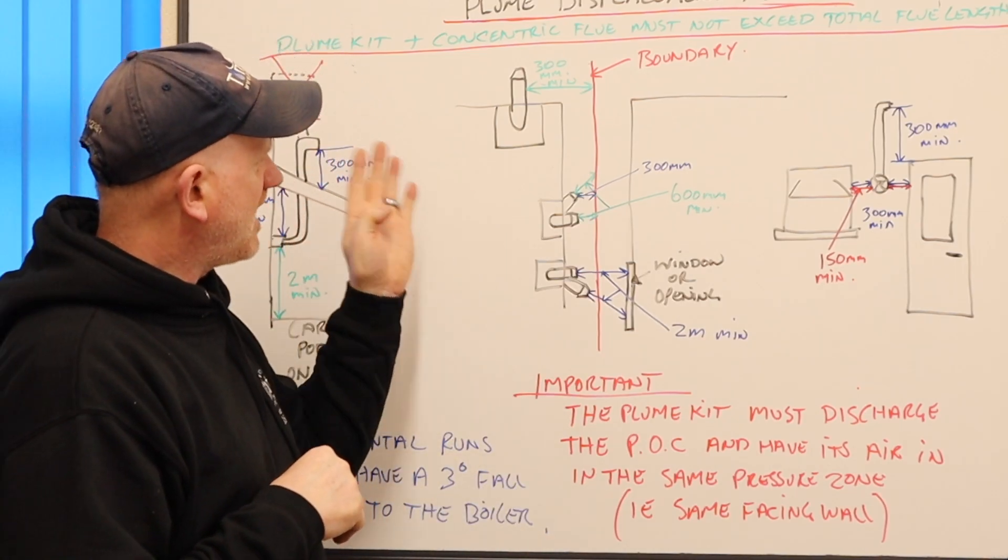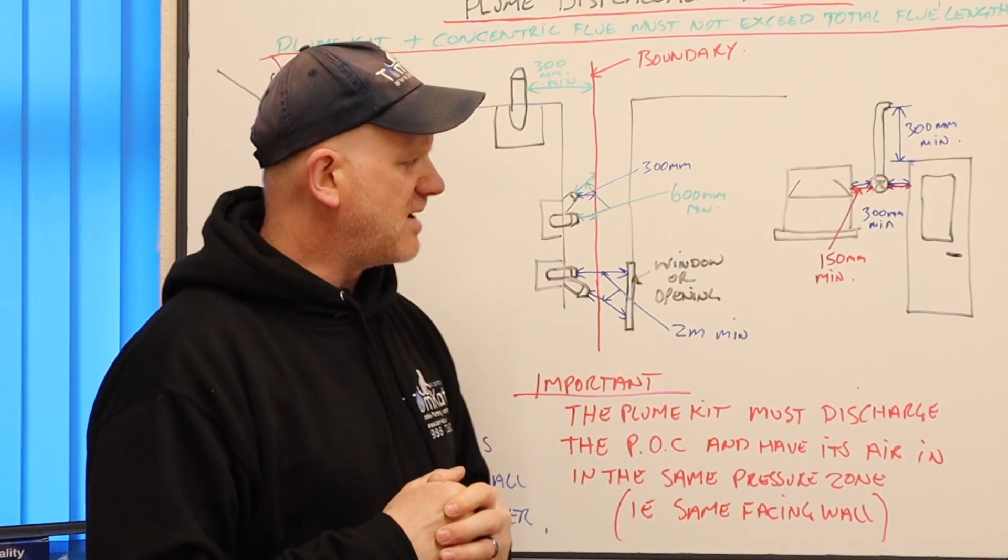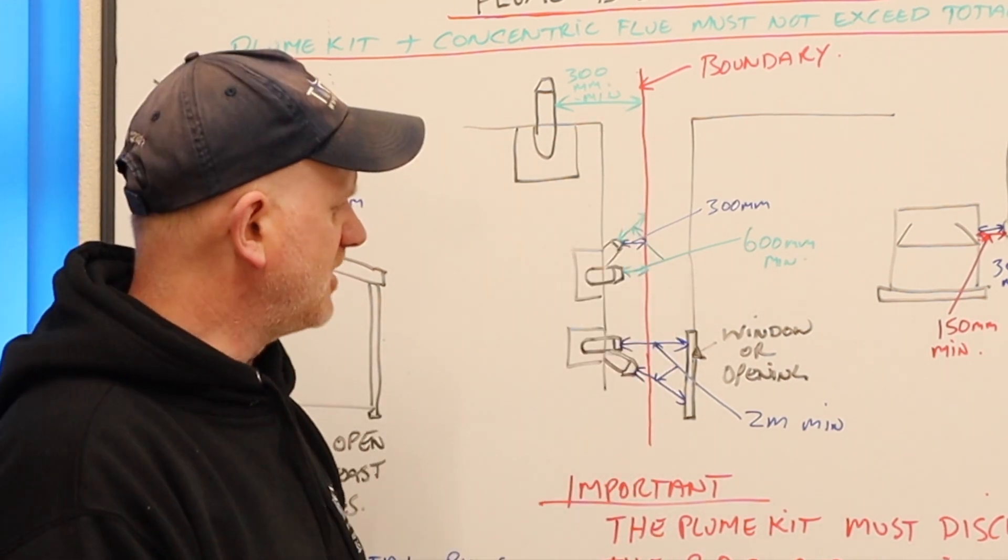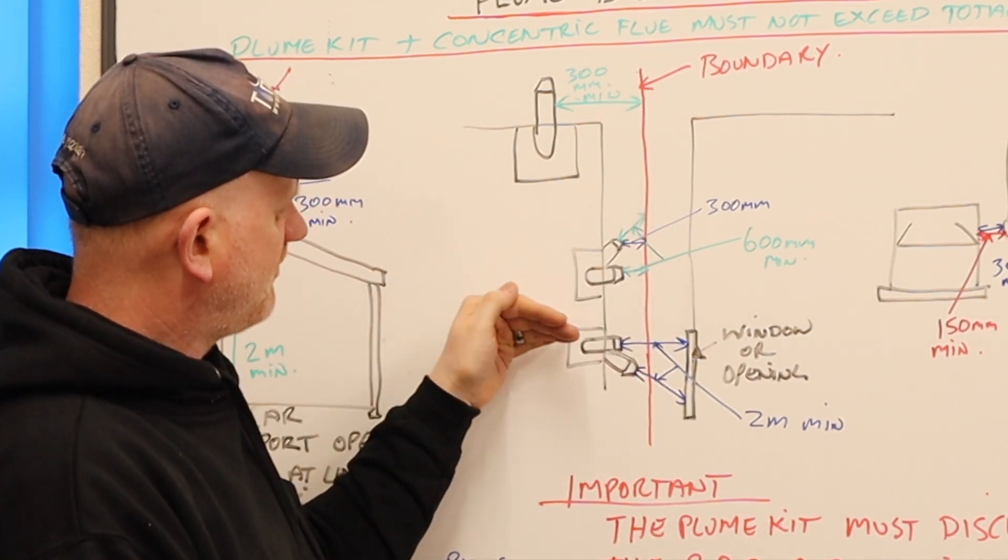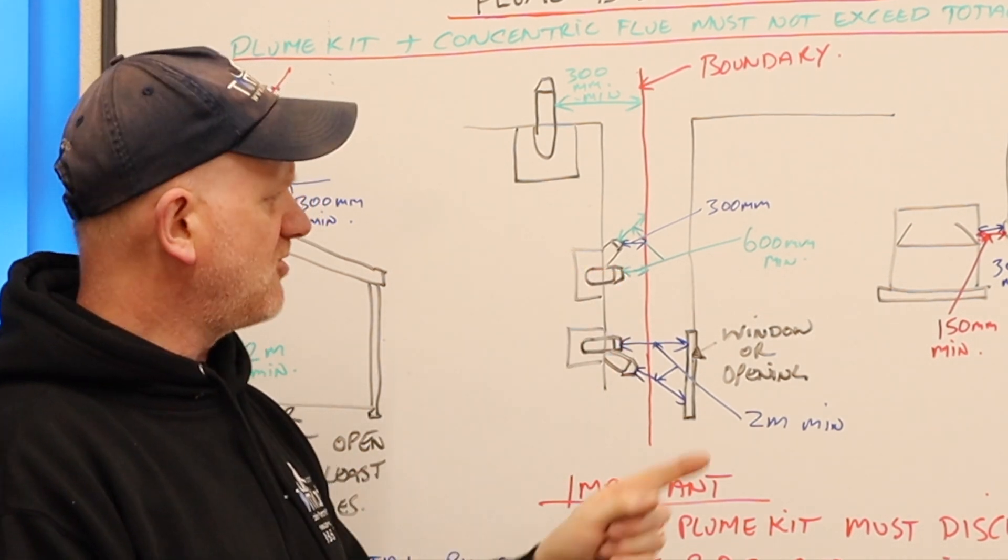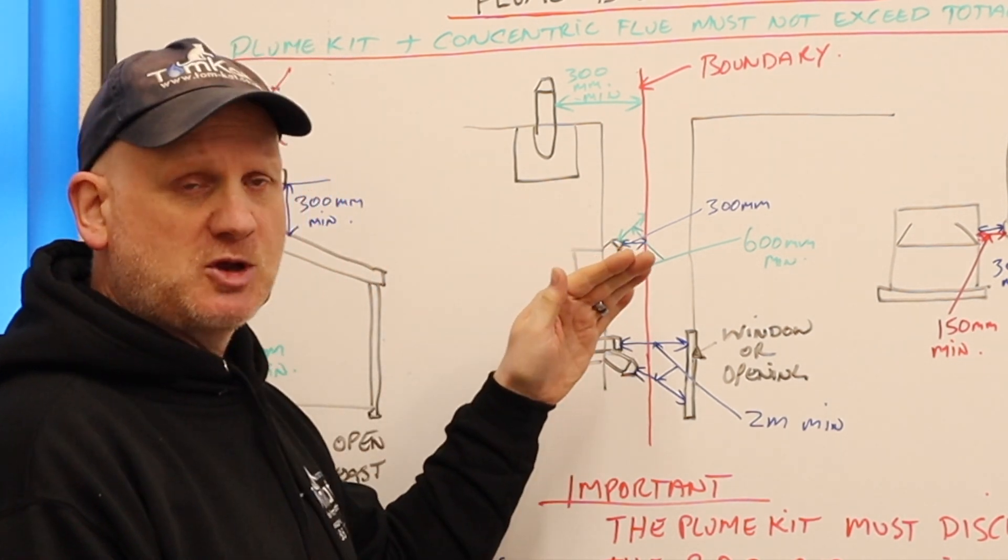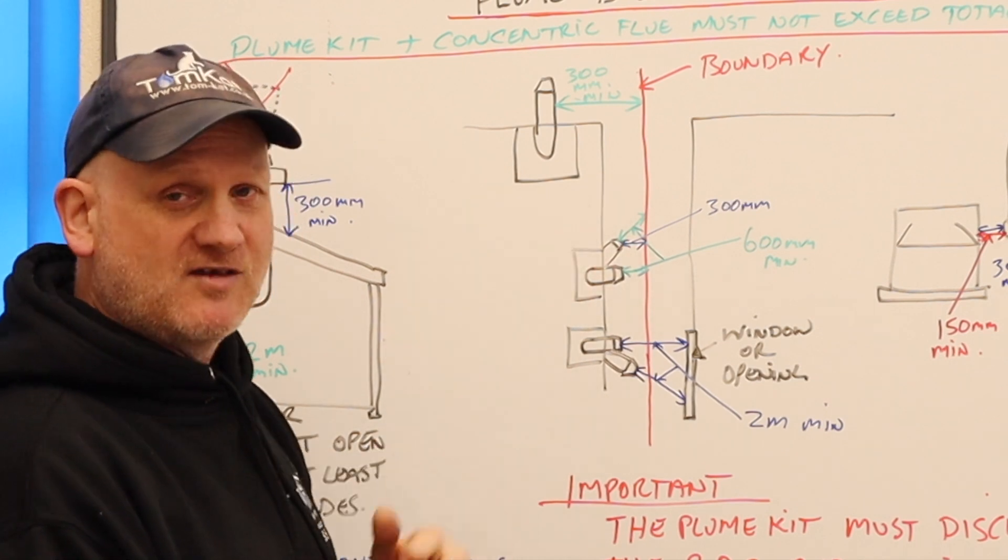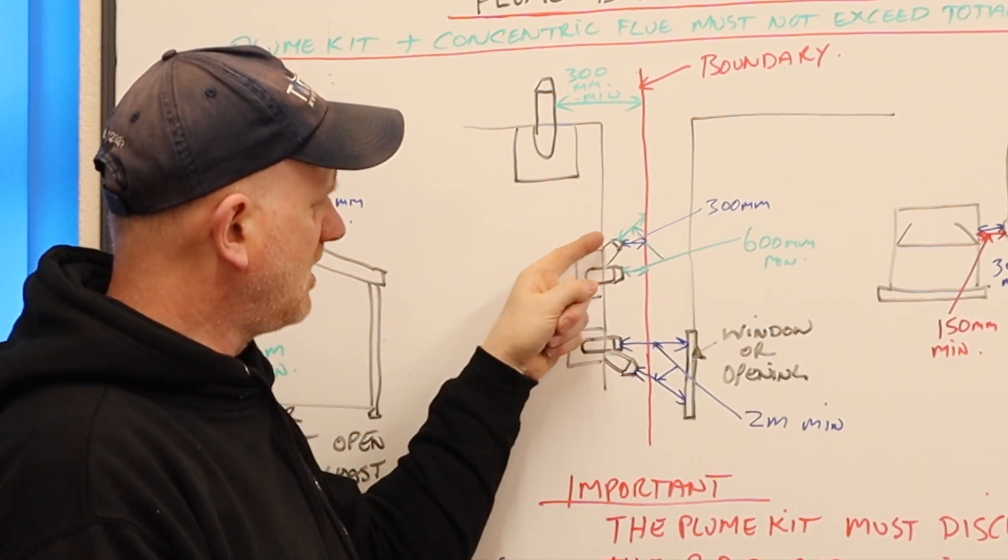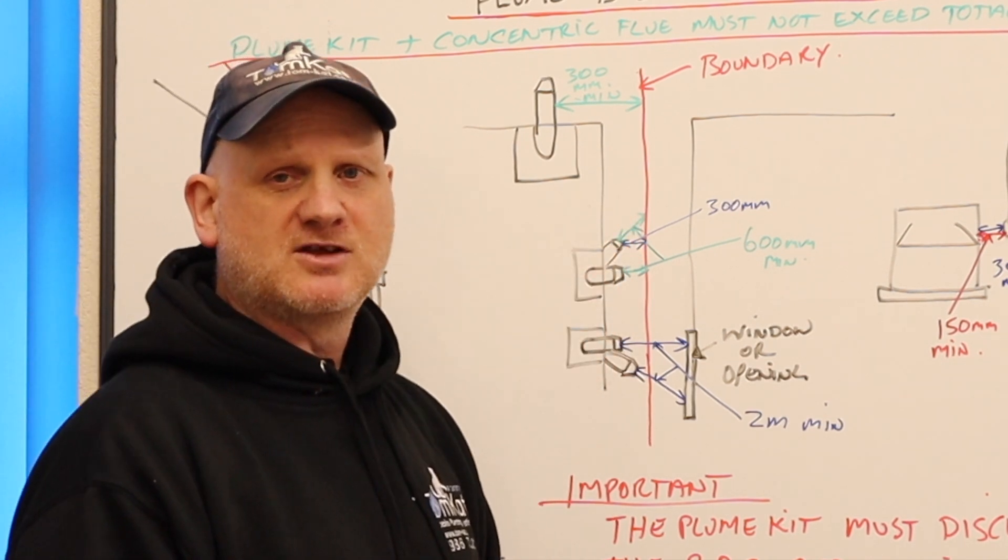Now, one of the other things you'll find is boundaries. How far we need to be away from boundaries. So we've got two houses here split by the middle with a boundary and we've got the flue facing the boundary. So if the flue is facing a boundary it needs to be more than 600 millimetres away. But if we have a plume kit and we turn it to 45 degrees that can be reduced to 300 mil going straight across because it will give you 600 mil on that 45 degrees.